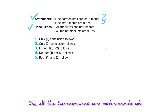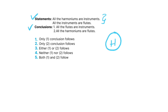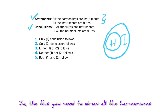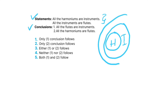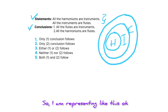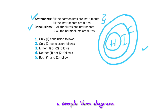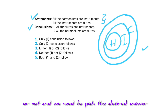All the harmoniums are instruments — so I'm drawing the Venn diagram here. All the harmoniums are inside the instruments circle. Then, all the instruments are flutes — so the instruments circle is inside the flutes circle. I'm representing it like this. From the statements, we've drawn a simple Venn diagram, and now we need to see if the conclusions follow.